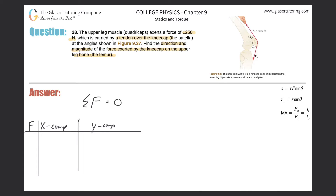For the first force, the quadriceps force FQ1: draw a right triangle in the picture. The hypotenuse is the force vector; you're trying to find the x-value using cosine. So FQ1's x-component is going to be 1250 times the cosine of 55 degrees. Directionality is important — these are vectors — so it's negative, because the x-component is pointing in the negative x-direction.